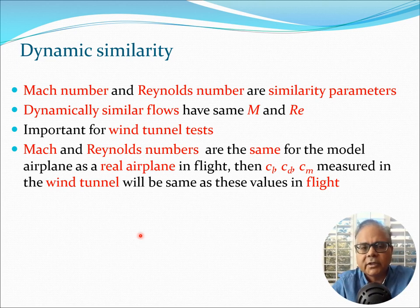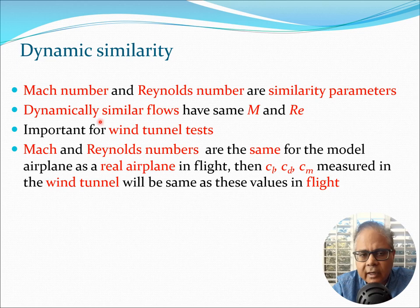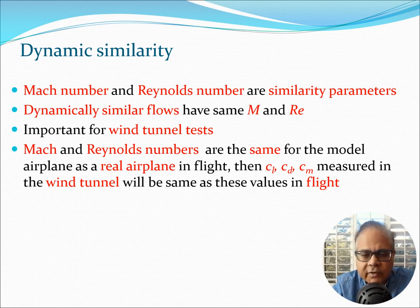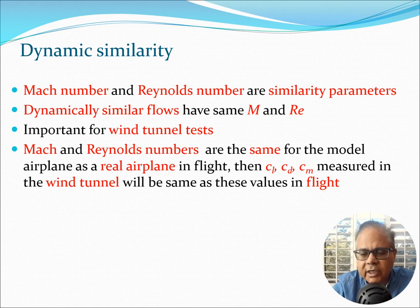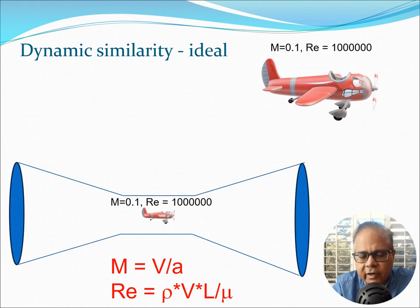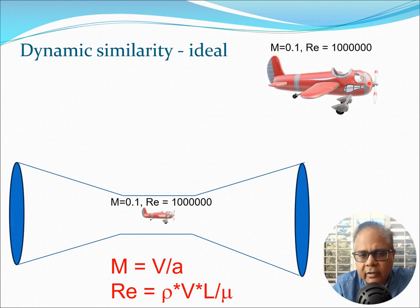Turning back to dynamic similarity: dynamically similar flows have the same Mach number and Reynolds number. This is important for wind tunnel testing because if the Mach and Reynolds numbers are the same for the model airplane as the real airplane in flight, then CL, CD, and CM measured in the wind tunnel will be the same as those values in flight. So there is a possibility of measuring these aerodynamic coefficients in wind tunnels if we can create a situation where both Mach and Reynolds numbers are matched.